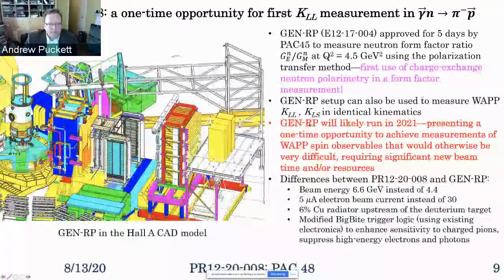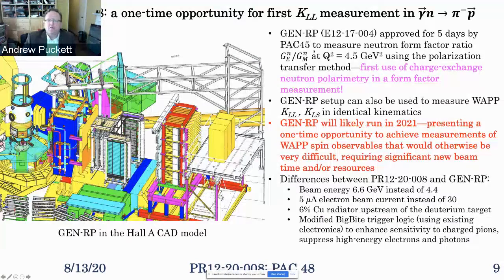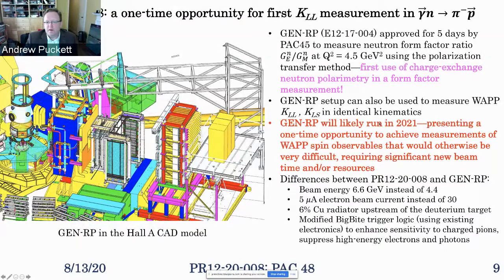This measurement is inexpensive, it's a one-time opportunity, and it's timely. It would provide valuable information that, depending on the results and their interpretation, could lead to a wider program of polarization measurements in this reaction. The basic idea is to piggyback on the GEN recoil polarization experiment approved by PAC 45 to measure the neutron form factor ratio. That experiment will use charge exchange polarimetry for neutrons in a form factor measurement for the first time. You can also use this setup to measure pion photo production recoil polarization observables in identical kinematics, and this experiment is likely to run next year.